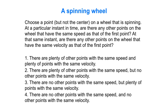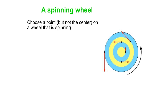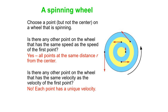You might want to pause the video here. Let's say we have a point on a spinning wheel. Are there any other points on the wheel at that same instant that have the same speed as the first point? What about the same velocity? If you plot the velocity vectors on the spinning wheel, you can see there are definitely points that have the same speed — all points at the same radius from the center. But there are absolutely no points that have the same velocity as one another: they might share direction but not magnitude, or magnitude but not direction. Each point has a unique velocity.